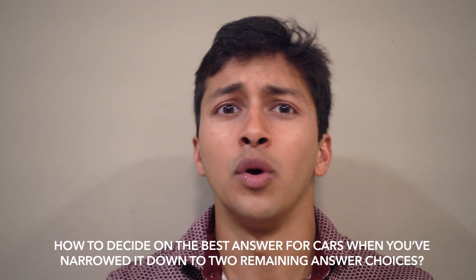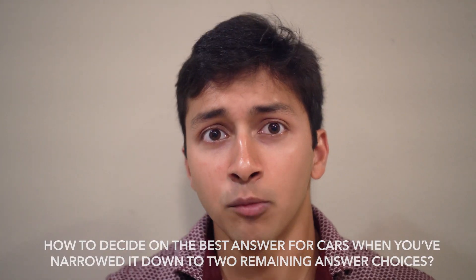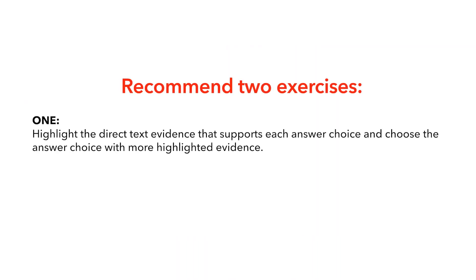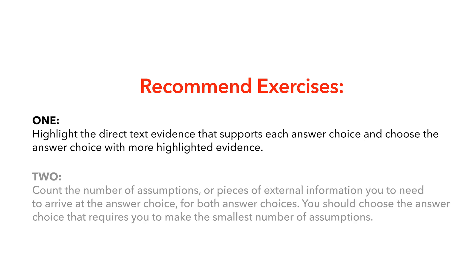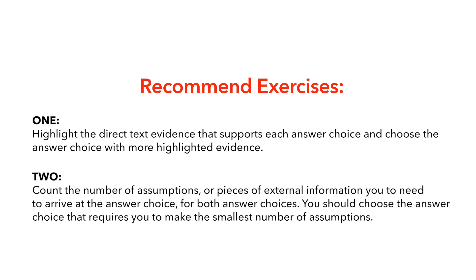One of the most common questions we get from students is how to decide on the best answer for CARS when you've narrowed it down to two remaining answer choices. We often hear students say they always get to this point and then choose the incorrect answer. To fix this, we recommend two exercises. First, highlight the direct text evidence that supports each answer choice and simply choose the answer choice with more highlighted evidence. Second, count the number of assumptions or pieces of external information you need to arrive at each answer choice. You should choose the answer choice that requires the smallest number of assumptions.